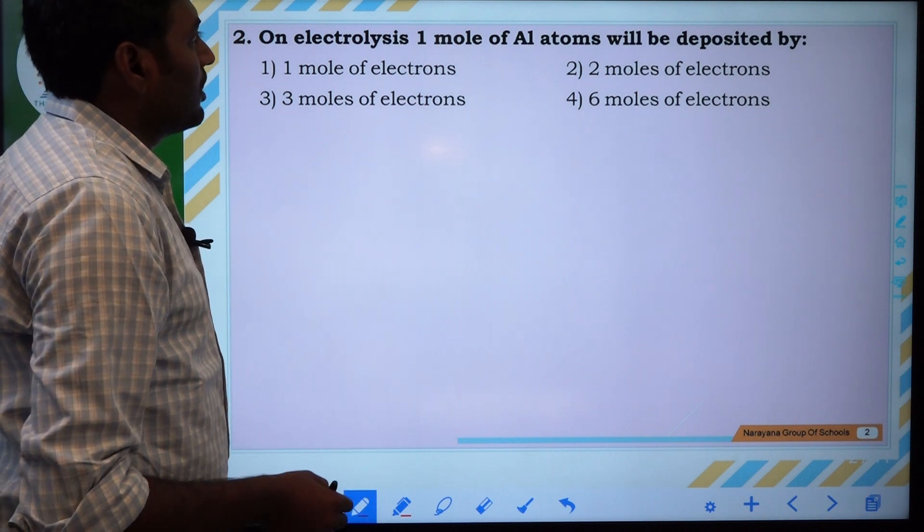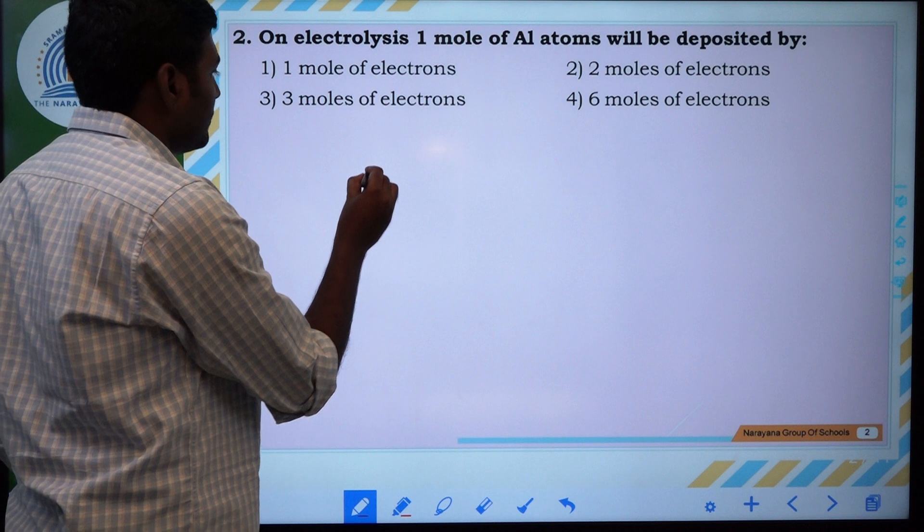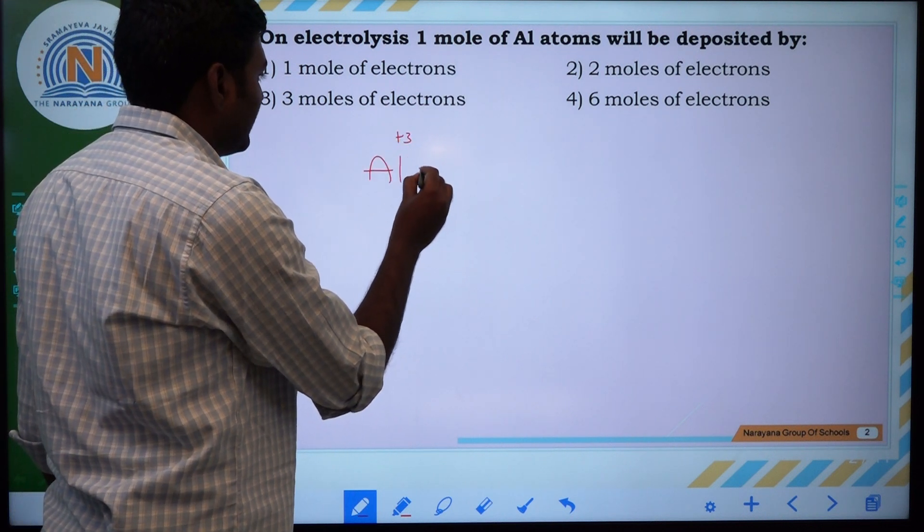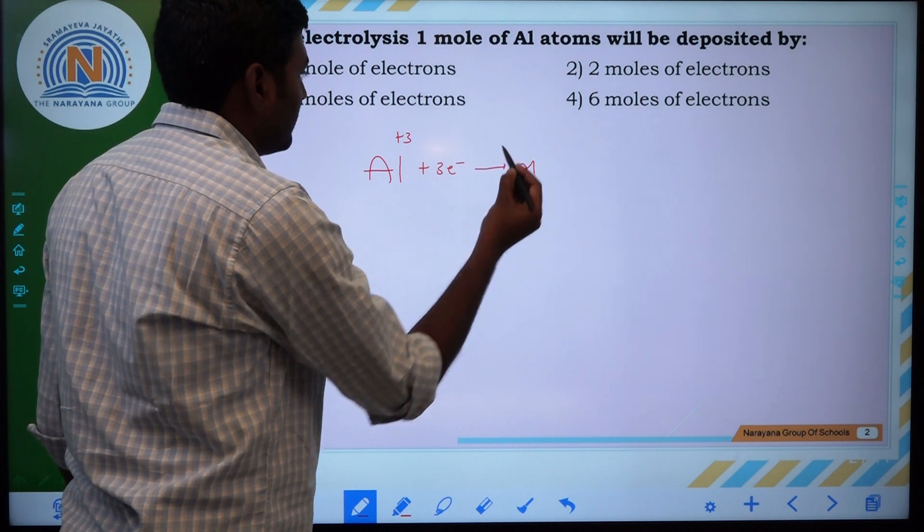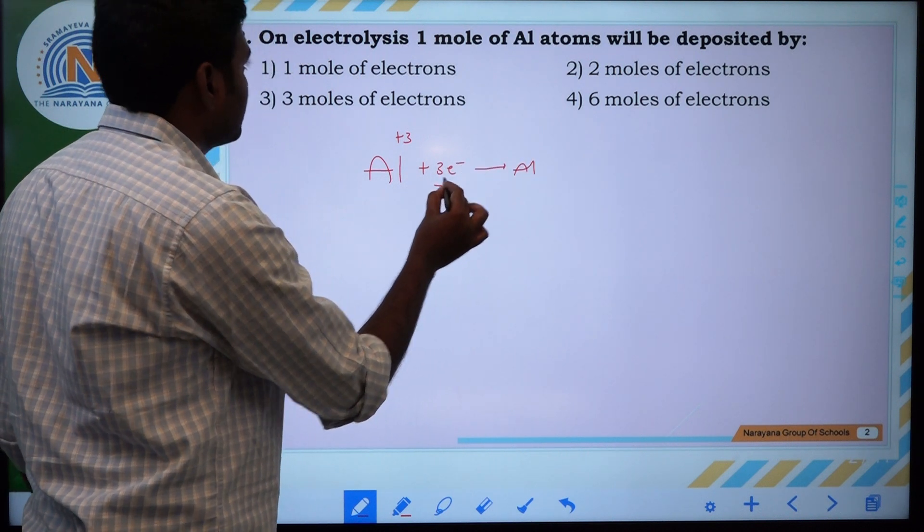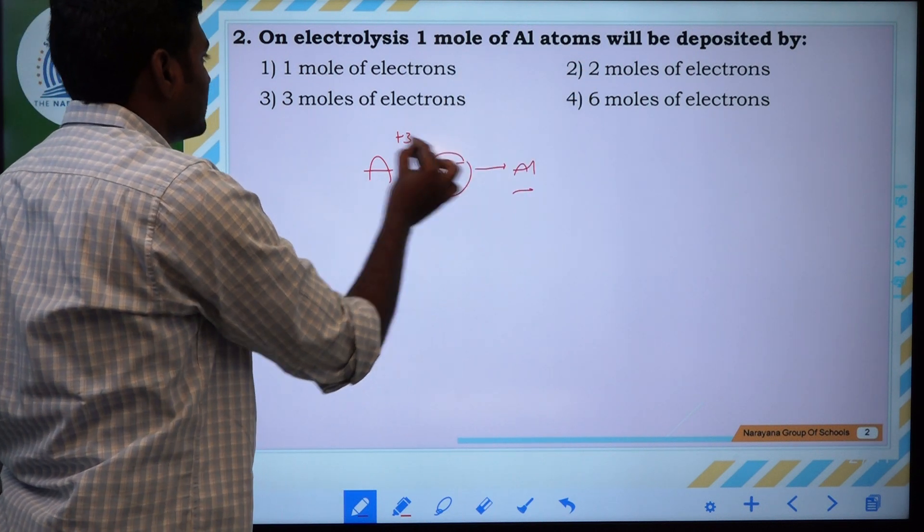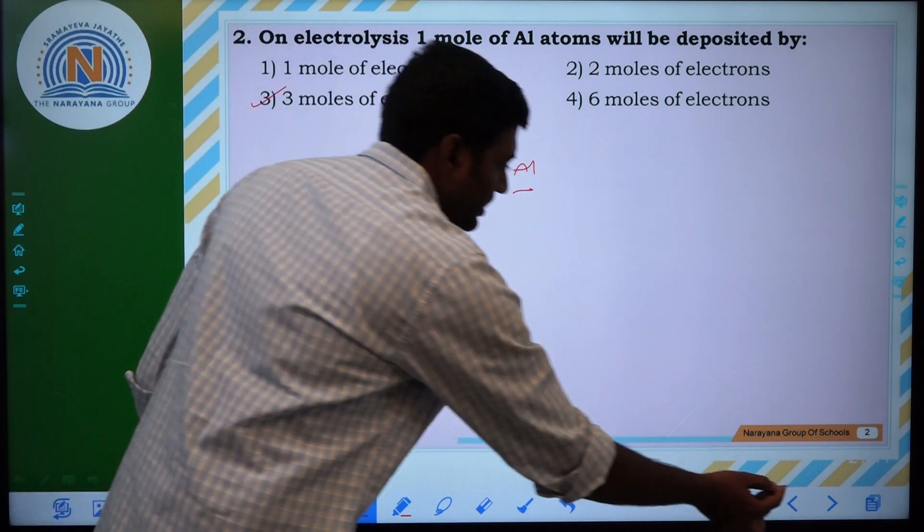On electrolysis, one mole of aluminium atoms will be deposited by... One mole of aluminium gives three electrons. You have to give Al, it is three electrons. Hence, on electrolysis, one mole of Al atoms gives three moles of electrons. So the correct answer is this. We will go for the next question.